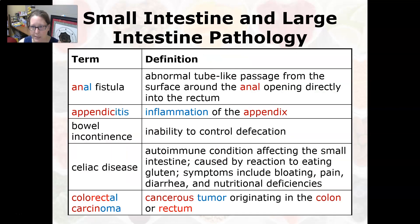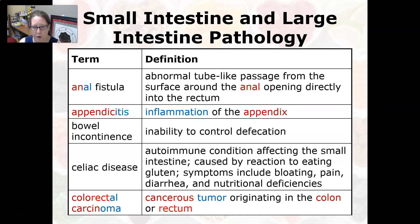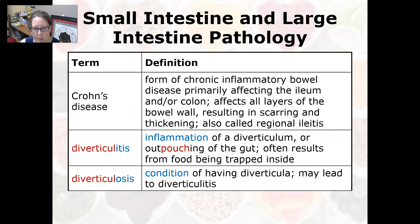Now into the small intestine and large intestine pathologies. An anal fistula is an abnormal tube-like passage or connection from the surface around the anal opening directly into the rectum. Appendicitis is an inflammation of the appendix. Bowel incontinence is the inability to control defecation. Celiac disease is an autoimmune condition affecting the small intestine, caused by a reaction to eating gluten found in wheat products. Symptoms include bloating, pain, diarrhea, and nutritional deficiencies, because inflammation impairs nutrient absorption. Colorectal carcinoma is a cancerous tumor originating in the colon or rectum. Crohn's disease is a chronic inflammatory bowel disease that primarily affects the ileum and/or the colon, affects all layers of the bowel wall, and results in scarring and thickening. It is also called regional ileitis.